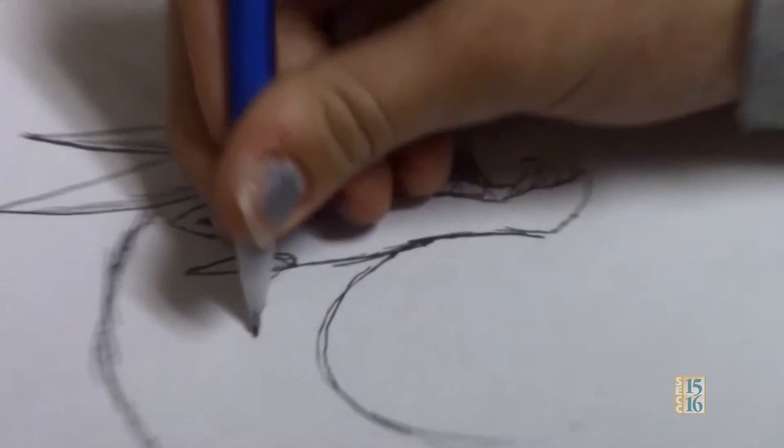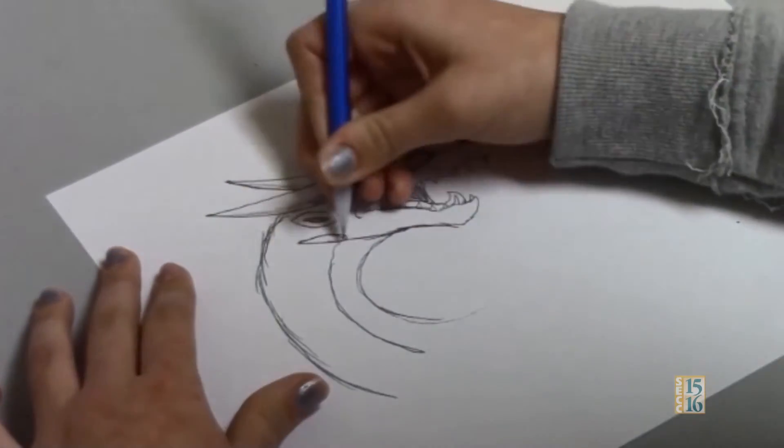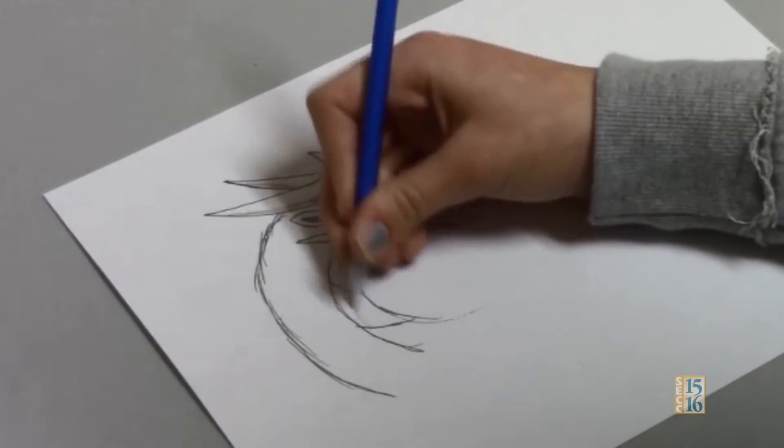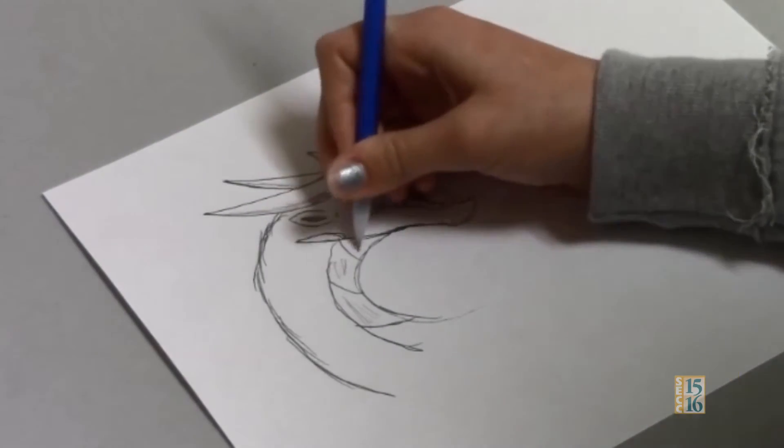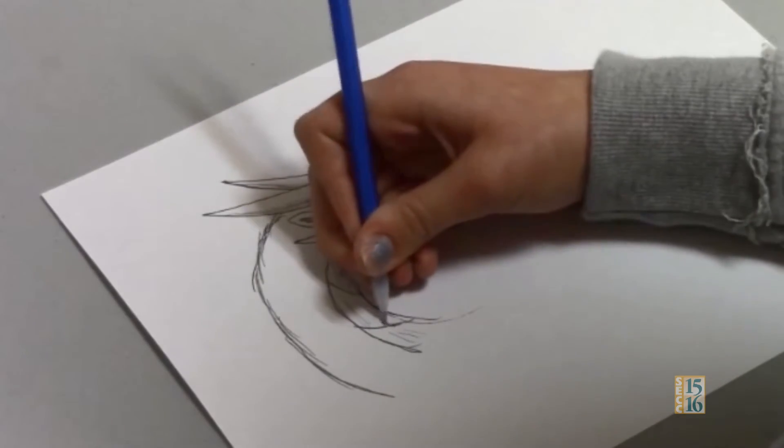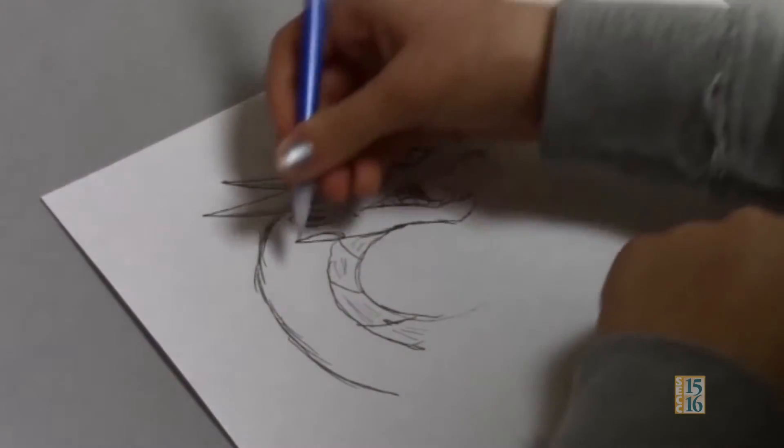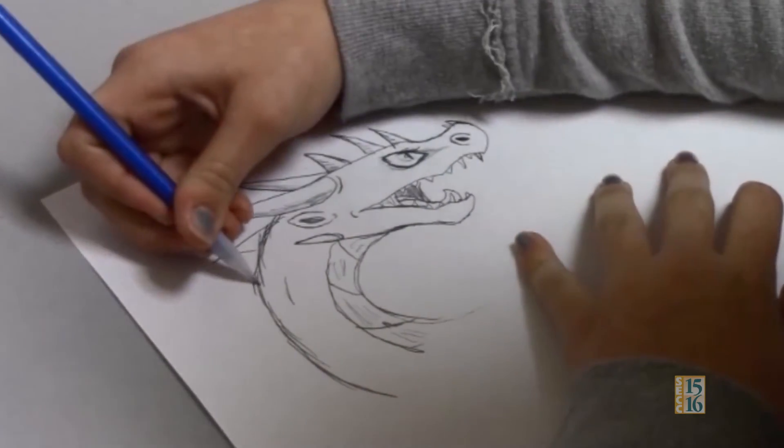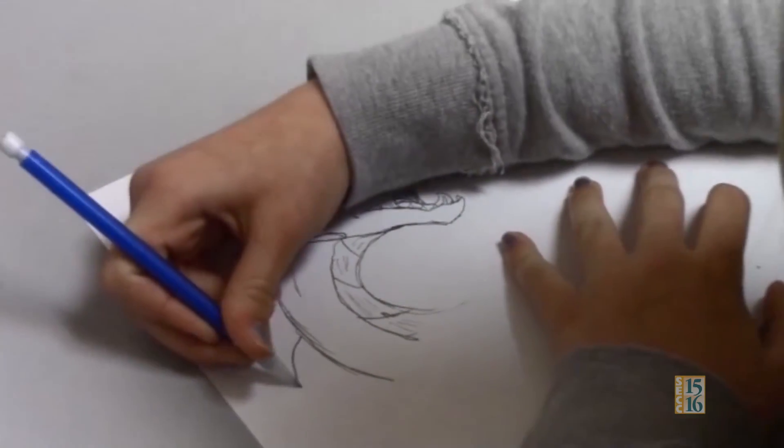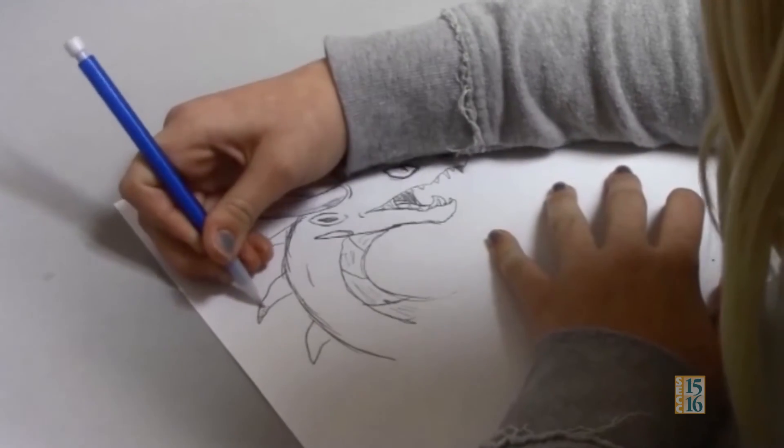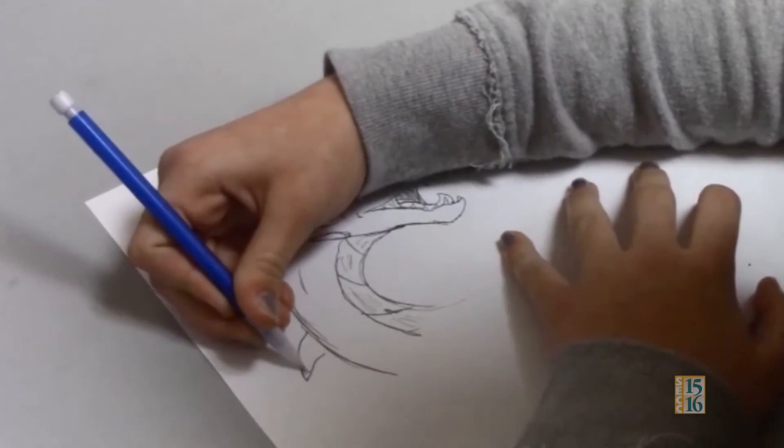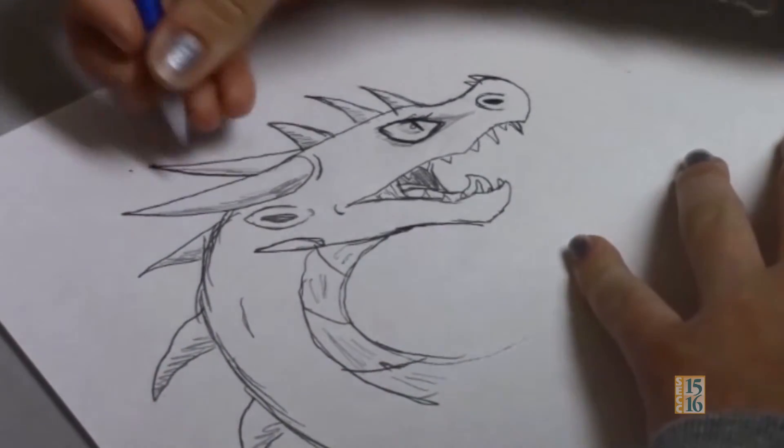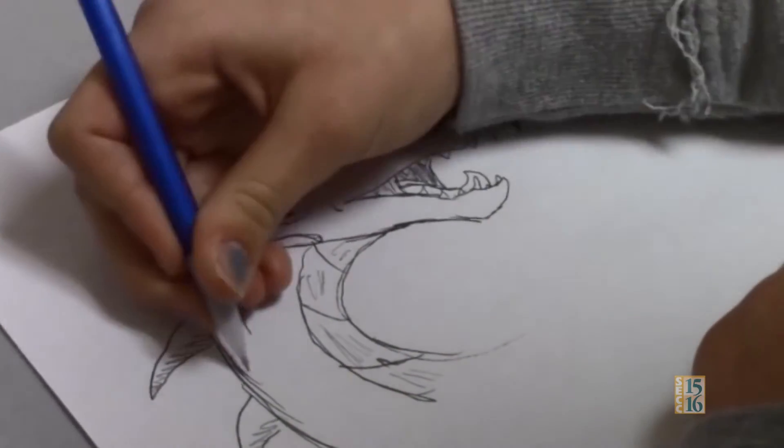And then you can add the rest of the neck in the back. It doesn't matter how long the neck is. And you can add the little scales on this part. And you can add lines to make them look real. And if you want you can add more spikes on the back. And add the shadows.